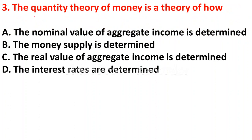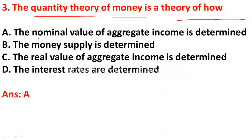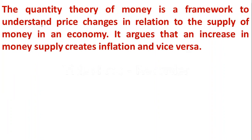The third question: the Quantity Theory of Money (QTM) is a theory of how — option A: the nominal value of aggregate income is determined, option B: the money supply is determined, option C: the real value of aggregate income is determined, option D: the interest rates are determined. The QTM is a theory of how the nominal value of aggregate income is determined, so option A is the correct answer.